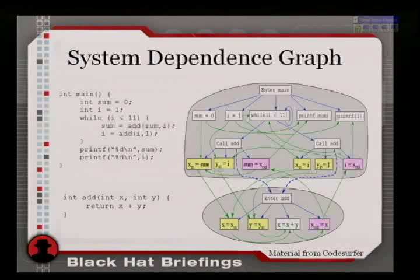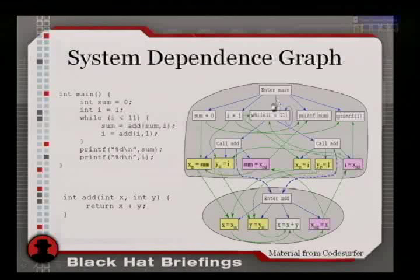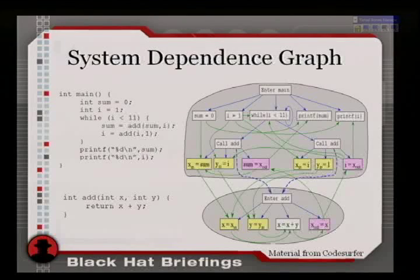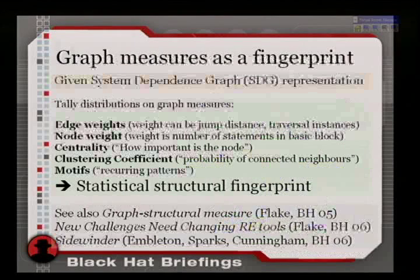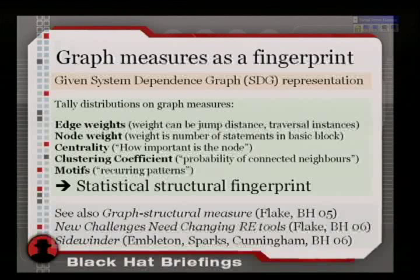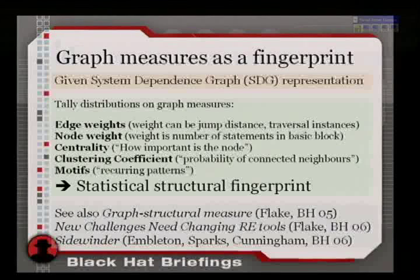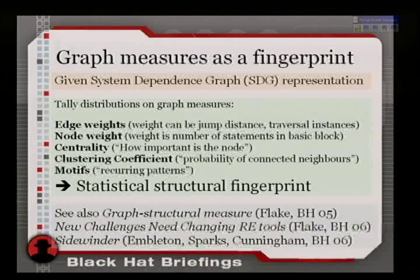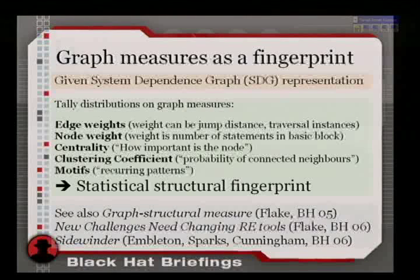The main point: these programs can be represented as graphs. The statements are nodes, and the control, data, and call dependencies are the edges. Given this, and given the rich theoretical literature on analyzing such graphs — I invite you to read Mark Newman's 2003 paper, 67 pages — we can find features of these graphs, construct statistics, and figure out whether we can use this for classification.